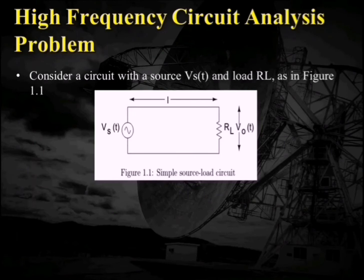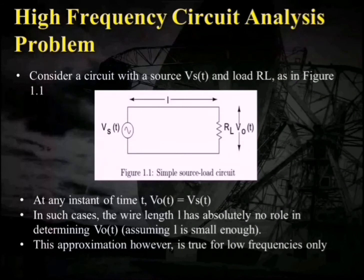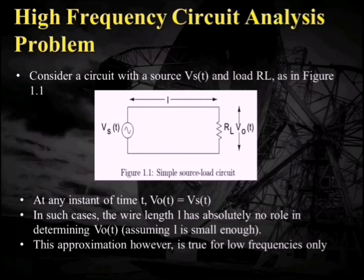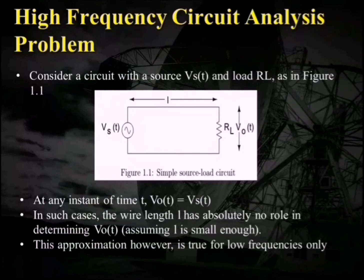At the initial look of this circuit, you can easily conclude that at an instant of time the output voltage V0 must be equal to Vs. In such cases, the wire length L has absolutely no role in determining the output voltage, or you can say that L has very negligible resistance. This approximation however is true only for low frequencies. For high frequencies, we have the propagation delay.